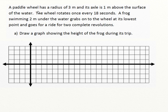Let's read the problem. A paddle wheel has a radius of 3 meters, and its axle is 1 meter above the surface of the water. The wheel rotates once every 18 seconds. A frog swimming 2 meters under the water grabs onto the wheel at its lowest point and goes for a ride for two complete revolutions. Draw a graph showing the height of the frog during its trip.